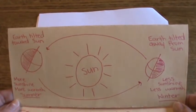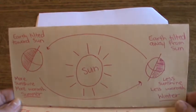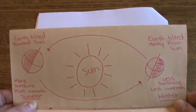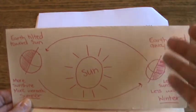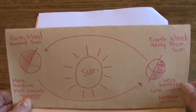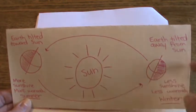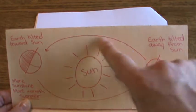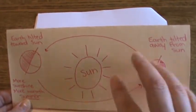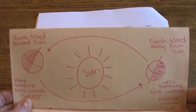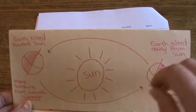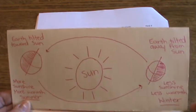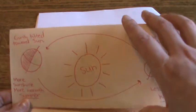When you open it up, this illustration shows that when Earth is tilted toward the Sun, we have more sunshine, more warmth, and we have summer. When it is tilted away from the Sun, you have less sunshine, less warmth, and we have winter. So it's showing how Earth is revolving around the Sun and what is happening at those different tilts and placements — just one illustration showing how we have seasons.